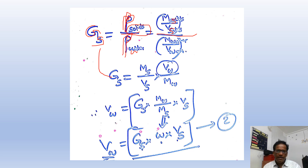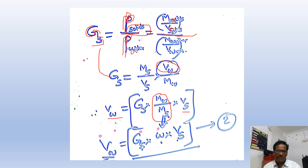What I am looking for now is Vw. Volume of water Vw equals Gs times Mw divided by Ms, times Vs. Now, mass of water by mass of solids is the moisture content, or water content of soil, designated as w. Therefore Vw equals Gs times w times Vs. This is Equation 2.